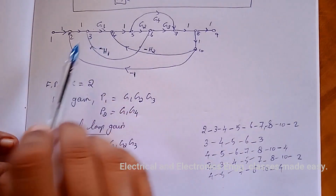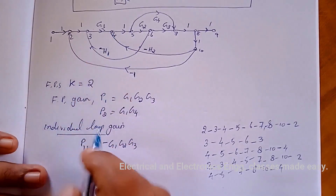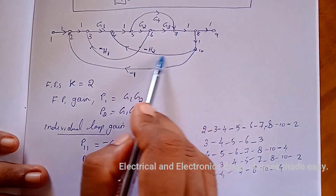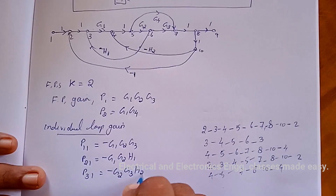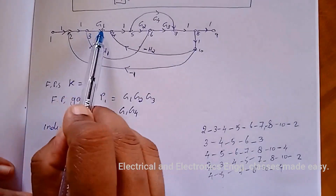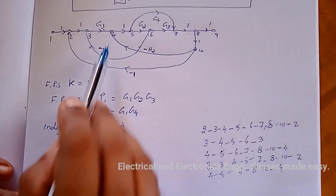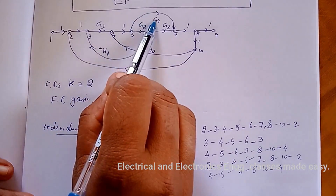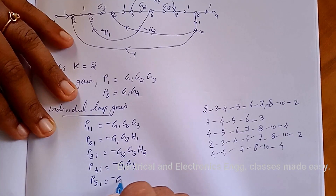The second individual loop gain P21 involves nodes 3, 4, and uses G1, G2, and minus H1, giving P21 = −G1·G2·H1. The third loop gain P31 = −G2·G3·H2. The fourth loop gain P41 involves G1 and G4 with negative feedback: P41 = −G1·G4. The fifth individual loop gain P51 involves G4 and minus H2, giving P51 = −G4·H2.